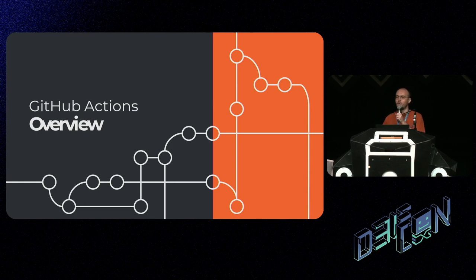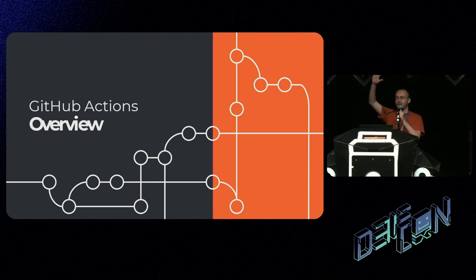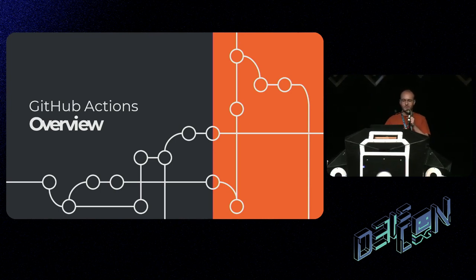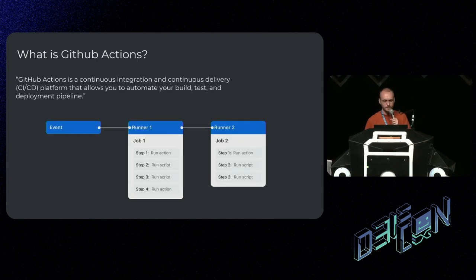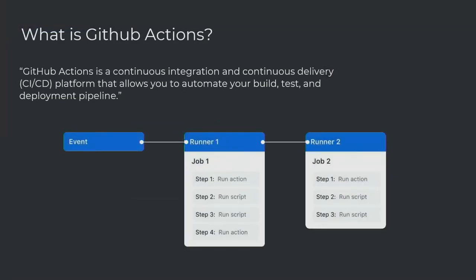Before we begin, let's do a quick overview of what GitHub Actions is. How many of you are using GitHub Actions - by a raise of hand? That's a lot. So I'll do this quick and get everybody on the same page. GitHub Actions is a continuous integration and continuous delivery platform - CI/CD - that allows you to automate your build, test, and deployment pipelines. There are events that can trigger pipelines, such as push, pull request events, and so on. Pipelines in GitHub Actions are called workflows, which can contain multiple jobs, each running on a different runner, and each job can contain multiple steps. Each step can contain a bash command or an action.